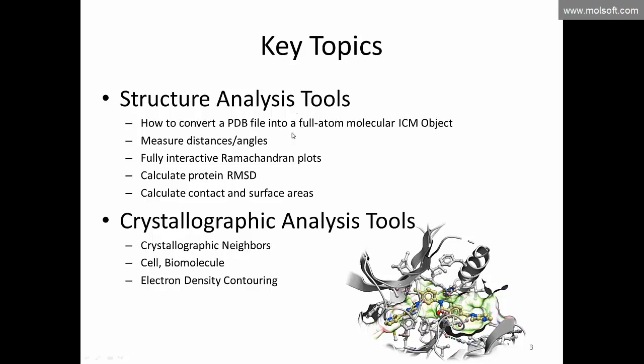Today's key topics are the structure analysis tools. We're going to load a PDB file and then build a full atom molecular ICM object so you can look at hydrogen bonds, electrostatic surfaces, and interactions. We're going to see how to measure distances and angles, how to build fully interactive Ramachandran plots, how to calculate protein RMSD, and how to calculate contacts and surface areas. For the crystallographic analysis tools you need ICM Browser Pro, which contains tools for generating crystallographic neighbors and electron density contouring.